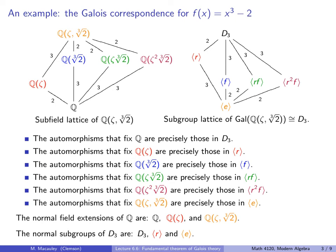Let's return to a familiar example which nicely illustrates the Galois correspondence for the polynomial x³ - 2. On the left is the splitting field Q adjoined zeta and the cube root of 2, and the subfield lattice. On the right is the Galois group and the subgroup lattice. These lattices are identical in structure if you turn one upside down. There is a bijection between subfields and subgroups given by the color coding, and a correspondence between the numbers on the edges — degrees of field extensions on the left and indices of subgroups on the right.